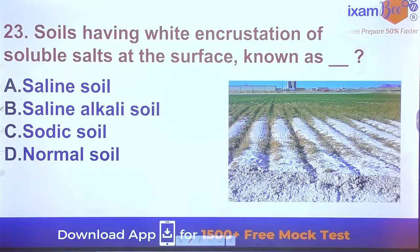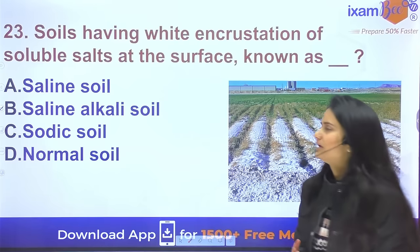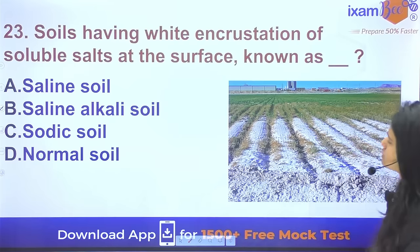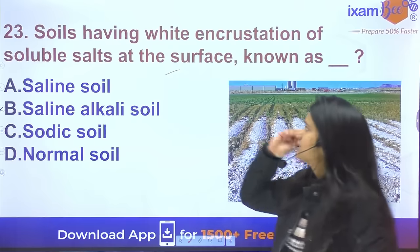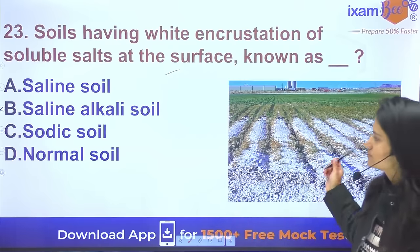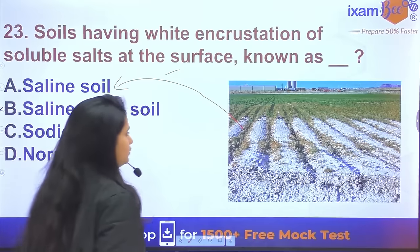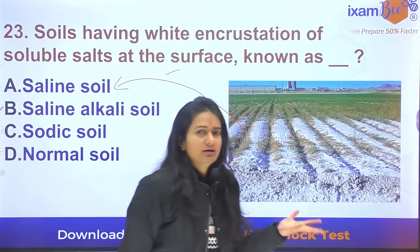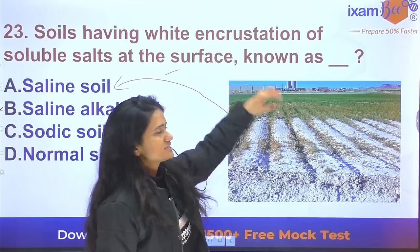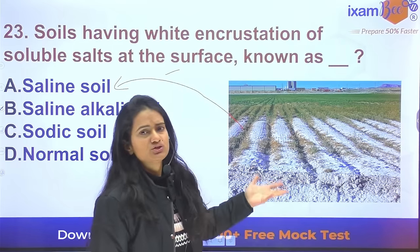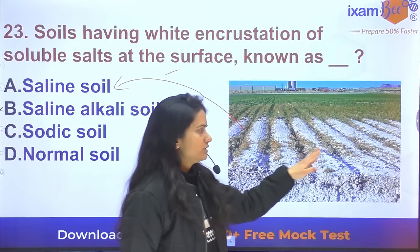Question 23 from soil science: Soils having white incrustation of soluble salts at the surface — which type of soil is this? This occurs in saline soils. Due to high evaporation, salts present in the water are brought upward to the surface along with water, forming white incrustation.